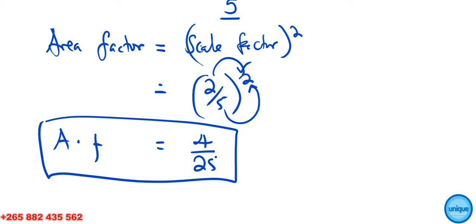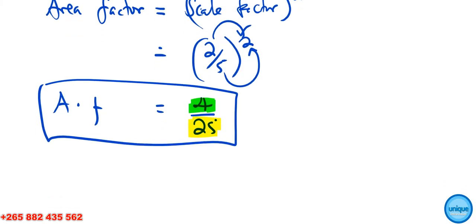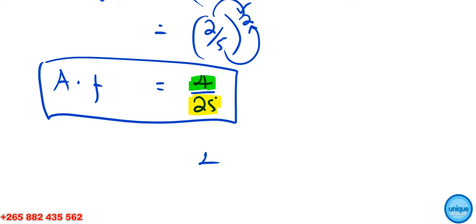We are going to use this area factor. The numerator represents the smaller rectangle whereas the denominator represents the bigger rectangle. So 4/25 equals the area of the smaller rectangle divided by the area of the bigger rectangle.